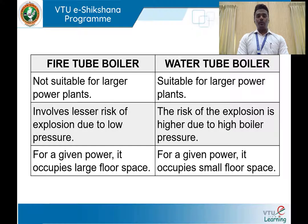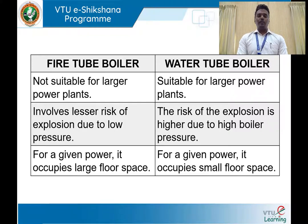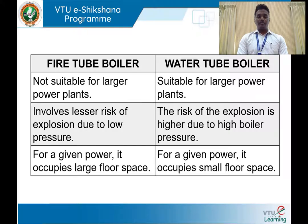To summarize the difference: in a fire tube boiler, flue gases flow inside the tubes and water passes around them. In a water tube boiler, water flows through the tubes and hot gases pass around them. Fire tube boilers generate steam at low pressure for low pressure applications, while water tube boilers can generate steam up to 100 bar for high pressure applications. Due to lower operating pressure, fire tube boilers pose less risk of explosion; water tube boilers carry more explosion hazard if not properly managed.